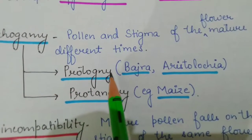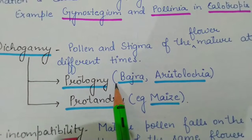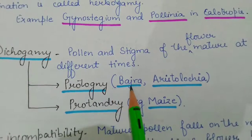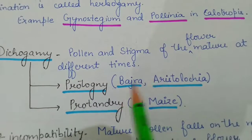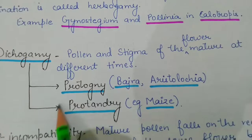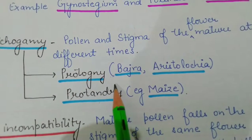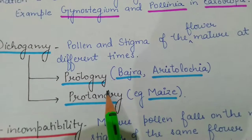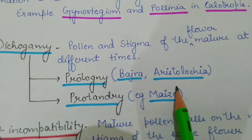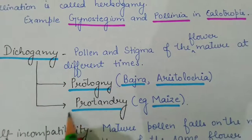In case of protogyny, the gynoecium or pistil or carpel — the female reproductive part — matures earlier than the male reproductive part, which is the androecium or stamen. Examples are Bajra and Aristolochia, where the female reproductive part matures first. The opposite is protandry, where the male reproductive part matures earlier than the female reproductive part. Example is maize.